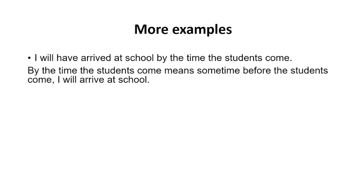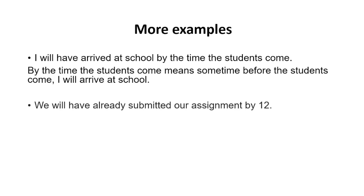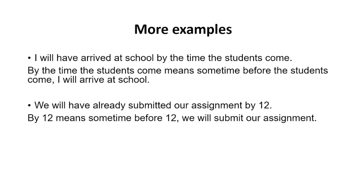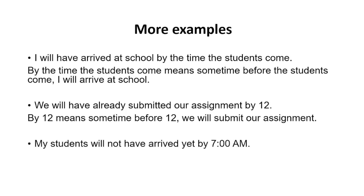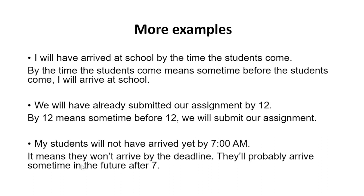More examples of future perfect: 'I will have arrived at school by the time the students come' — sometime before the students arrive. 'We will have already submitted our assignment by 12' — sometime before 12. 'My students will not have arrived yet by 7 am' — negative form, meaning they won't arrive by the deadline of 7 am. They'll probably arrive sometime after 7, maybe 7:30 or 8 am.